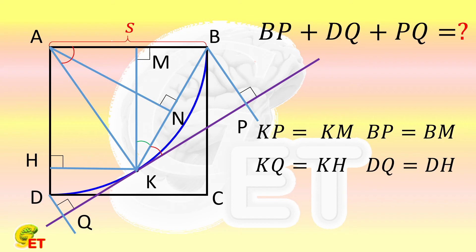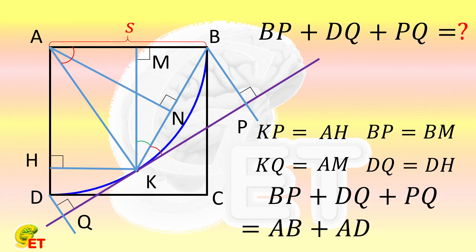Since AMKH is a rectangle with equal opposite sides, KP and KQ are equal to AH and AM, respectively. So the summation of BP plus DQ plus PQ is equal to AB plus AD, which is twice the side length, namely twice S.